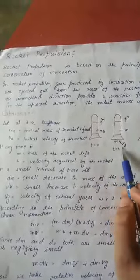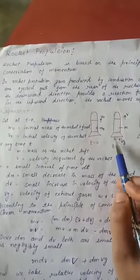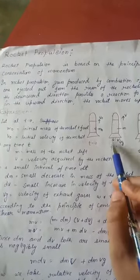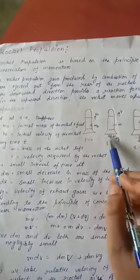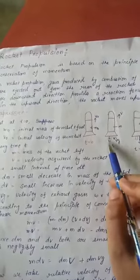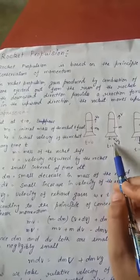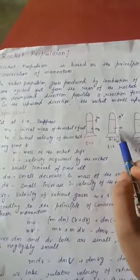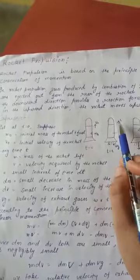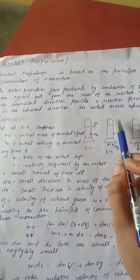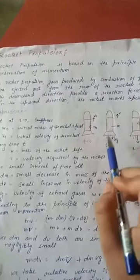When time is equal to T, M is the mass of the rocket. Now, the fuel is being burned in the downward direction, and the rocket moves in the upward direction.